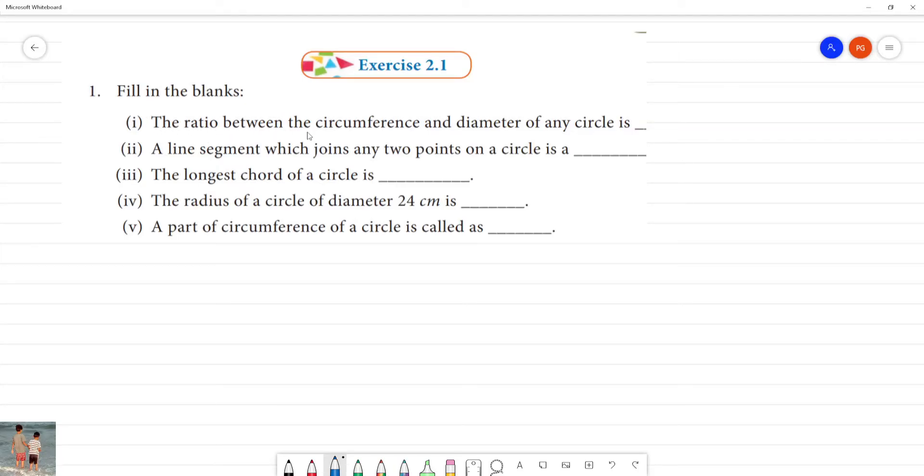Fill in the blanks. The ratio between circumference and diameter of any circle. First one, circumference of the circle formula is 2πr. Diameter is equal to 2r. If ratio is written, 2πr divided by 2r. If 2, 2 cancel, r r will cancel and what will be the answer? The answer is π. Clear?